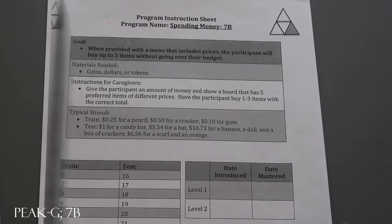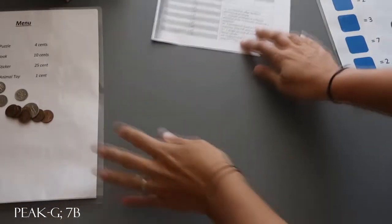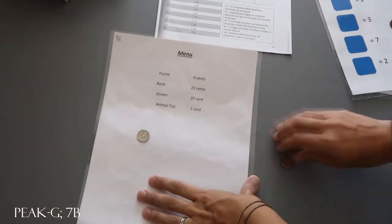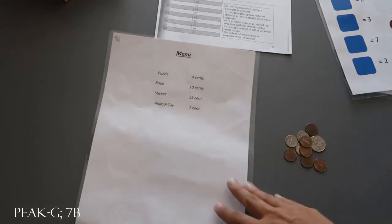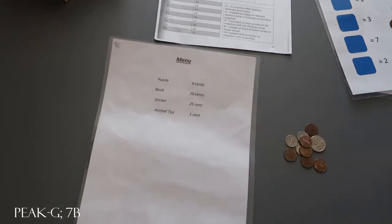So I'm just going to show you this first sample. I'm going to back out a little bit so you can see it all. So the first one we did a menu where we had a train side and a test side. We had a puzzle for 4 cents, a book for 10 cents, a sticker for 25 cents, and an animal toy for 1 cent.